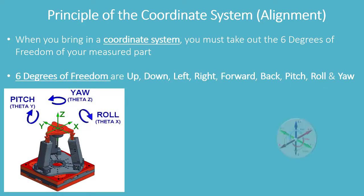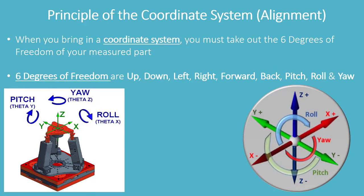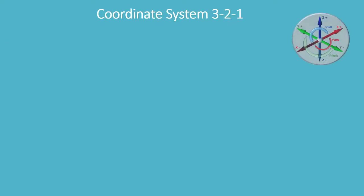When you bring in a coordinate system, you must take out the six degrees of freedom of your measured part. The six degrees of freedom are up, down, left, right, forward, back, pitch, roll, and yaw.